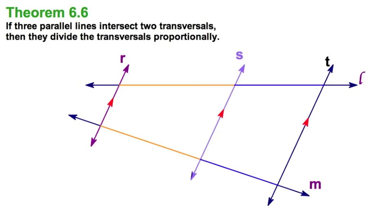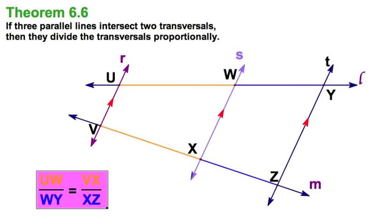This theorem tells me that orange is to blue as orange is to blue. Well, if you want to write that down, you may have to put some points in there. Let's label the points. We kept it the same as the book here. And our proportion, should we choose to write it down, looks like that.